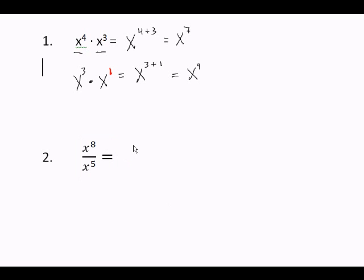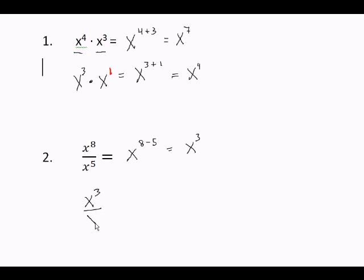Rule number 2: when you divide two numbers with the same base, the base stays the same and it stays on top. You subtract the powers — always top power minus bottom power. So X to the 8th divided by X to the 5th equals X to the 3rd. Another example: X to the 3rd divided by X to the 5th equals X to the 3 minus 5, which is X to the negative 2.